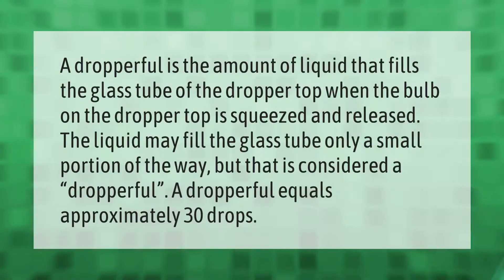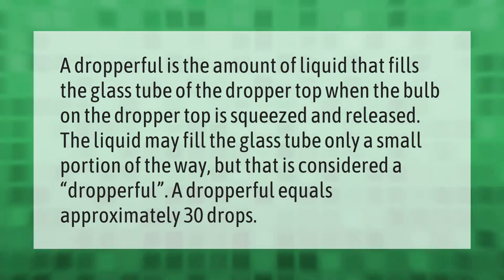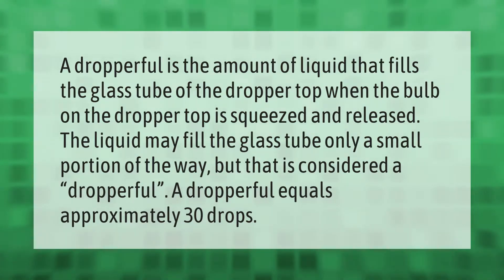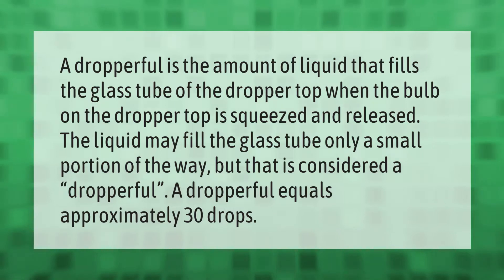A dropper full is the amount of liquid that fills the glass tube of the dropper top. When the bulb on the dropper top is squeezed and released, the liquid may fill the glass tube only a small portion of the way, but that is considered a dropper full. A dropper full equals approximately 30 drops.